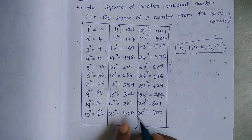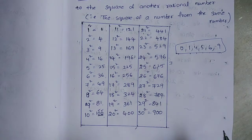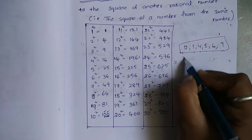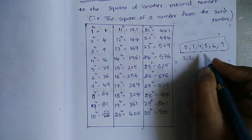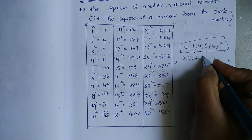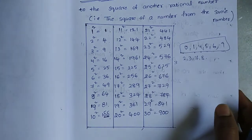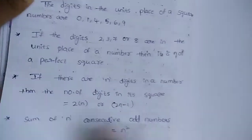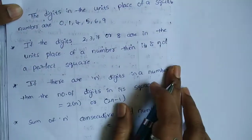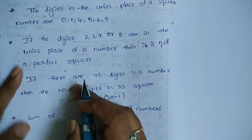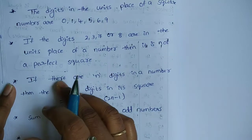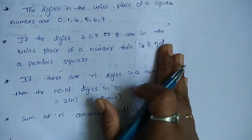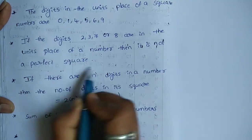If a number ends in 0, remember this rule: numbers ending in 2, 3, 7, or 8 are not perfect squares. If there are numbers ending in 2, 3, 7, or 8, they are not perfect squares.